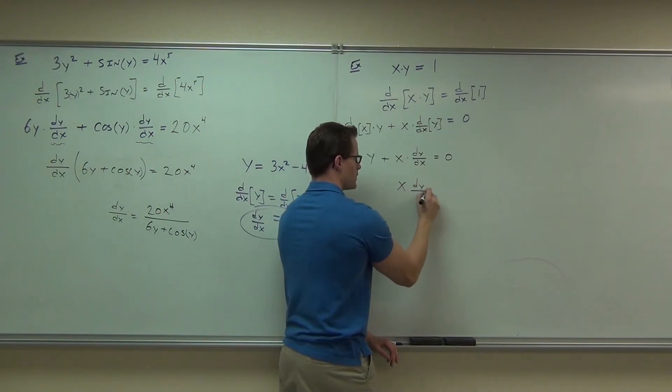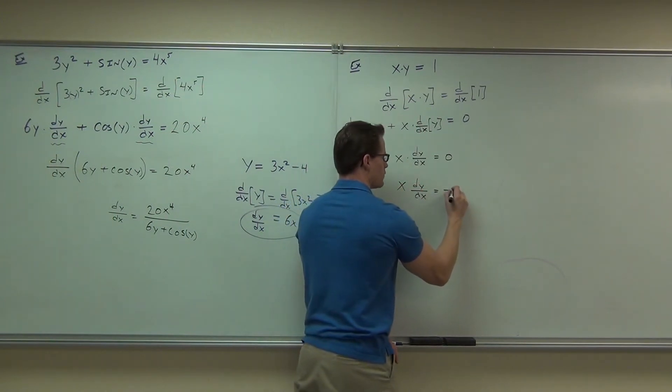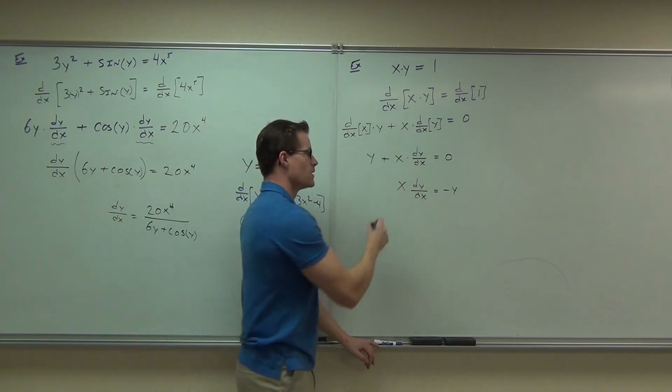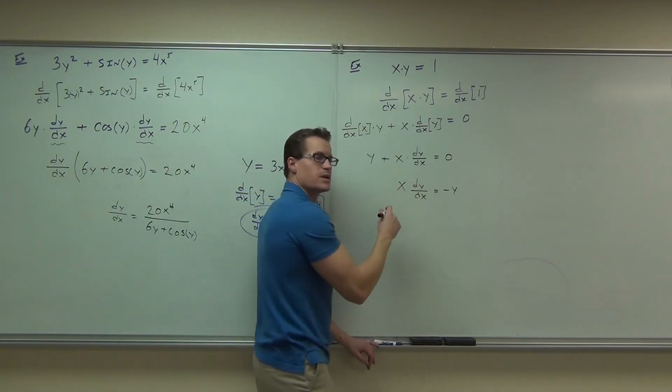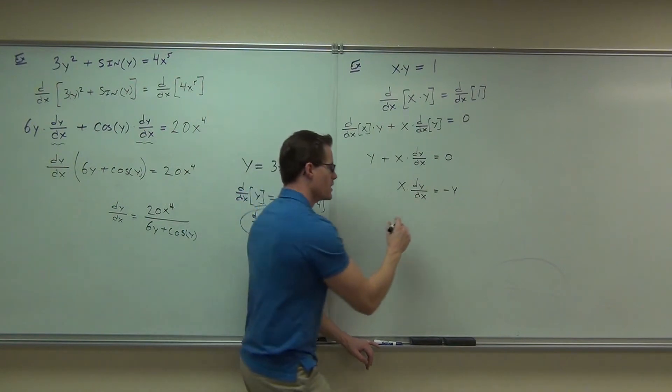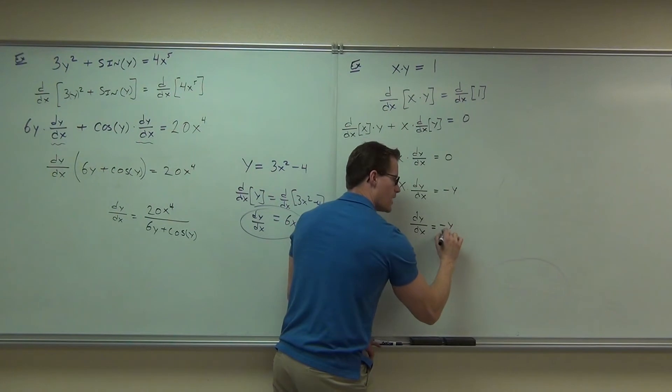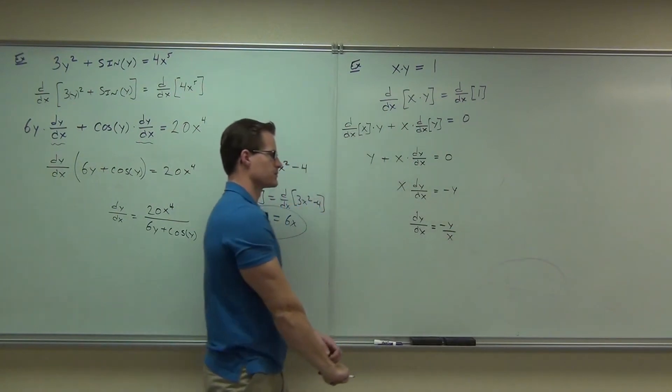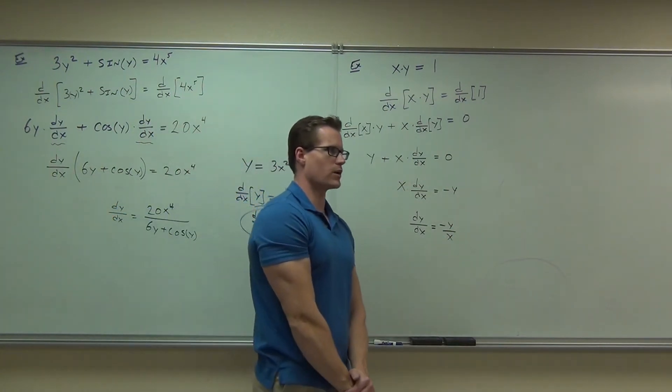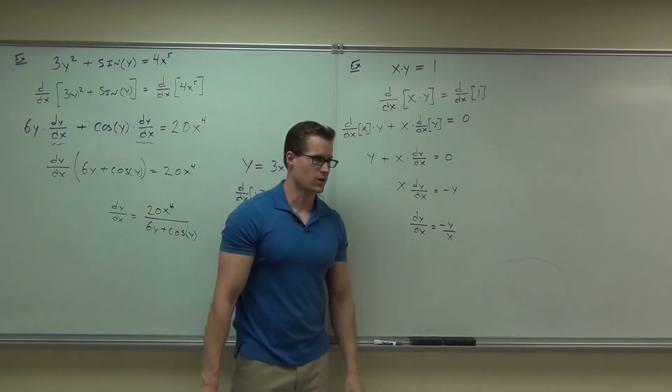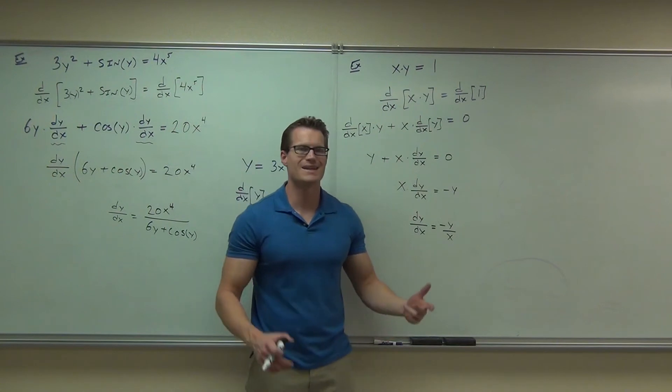So, X dy/dx equals negative Y? Good, divide by X, because that's being multiplied right now. If you divide by X, you get dy/dx equals negative Y over X. Now, I made you the guarantee that this is going to be negative 1 over X², and this is not negative 1 over X², this is negative Y over X. Why is that?